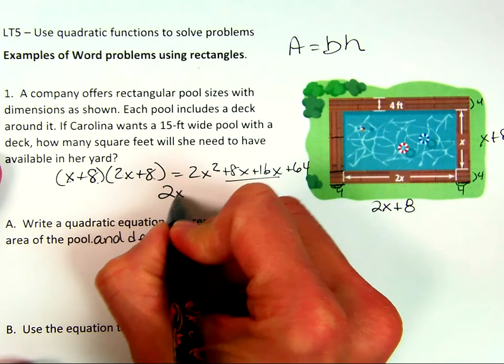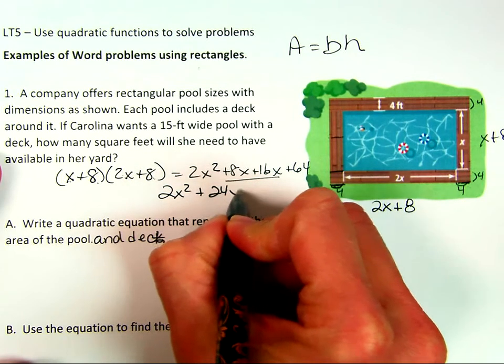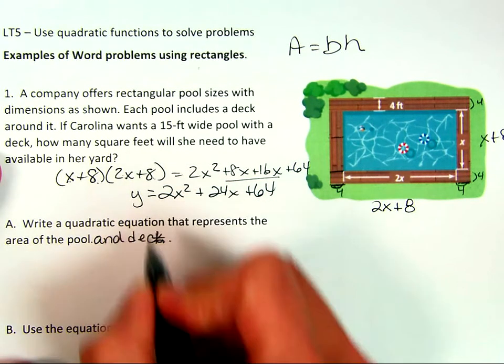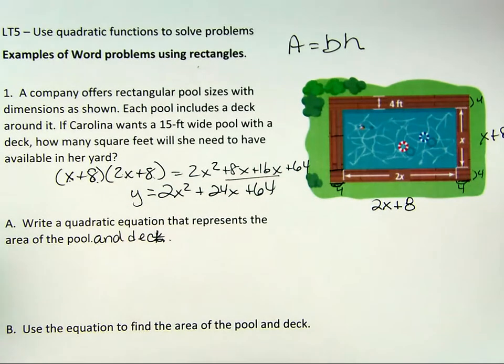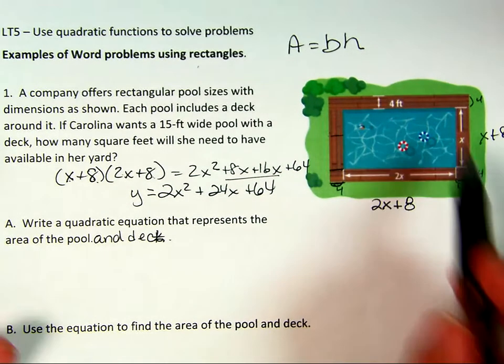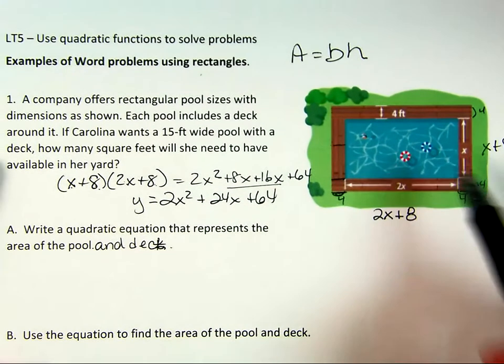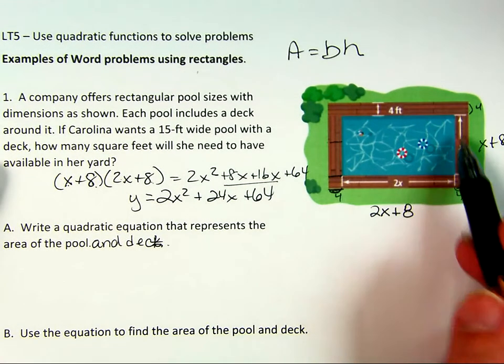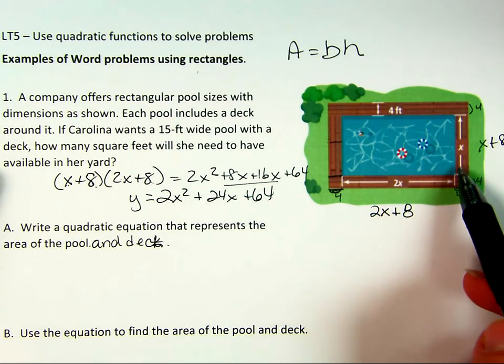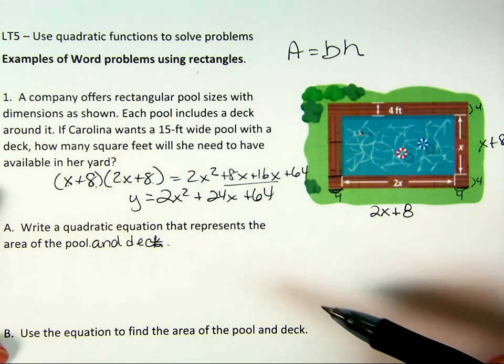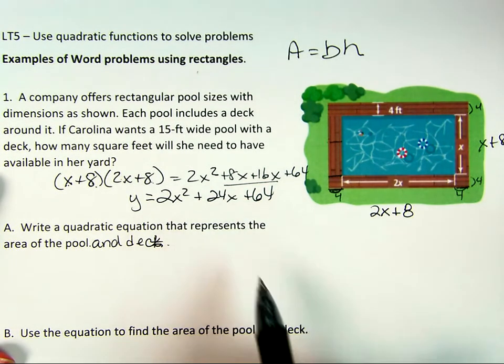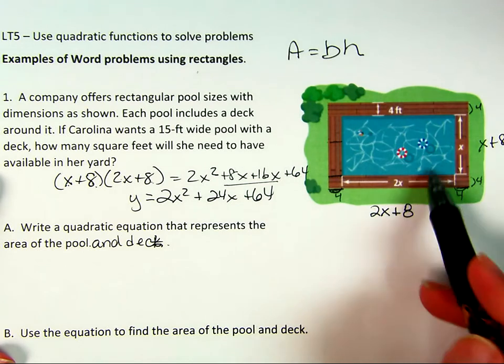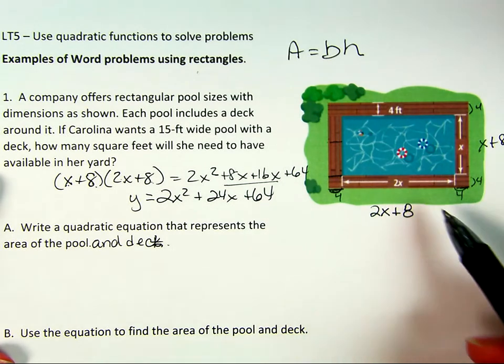We can clean this up a little bit, because these are combinable. So we're going to get 2x squared plus 24x plus 64. This equation represents how much space or ground she will need in her backyard. So if they offer pools in this dimension, that means if you wanted a 10-foot pool, you could plug in x equals 10.